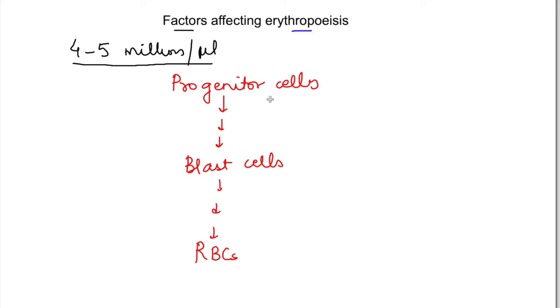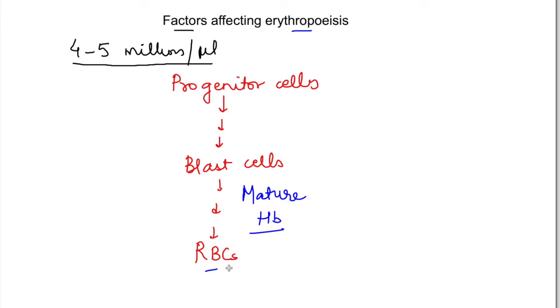First of all, you can see that RBC should develop as a blast cell from progenitor cells. Ultimately, blast cells should mature and they should add hemoglobin, from which RBCs are produced.